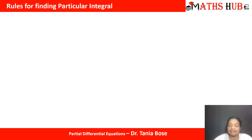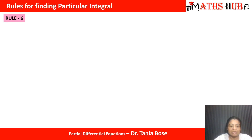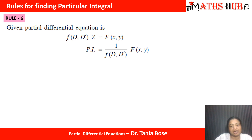When the right hand side function is an exponential function, or sine or cosine, or powers of x and y, or a product where one of the functions is exponential, or converting f of DD' into linear factors and integrating — those are the previous rules. Now let us see what is in this new rule. For any particular solution, we calculate it as 1 upon f(DD') into f(xy), and depending on the function f(xy) we decide our rule.